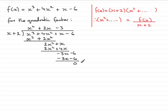In summary, this tells us that f(x) = (x + 2) multiplied by the quadratic factor x² + 2x - 3.